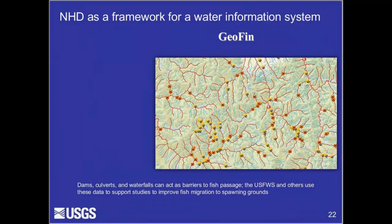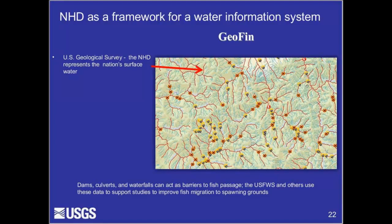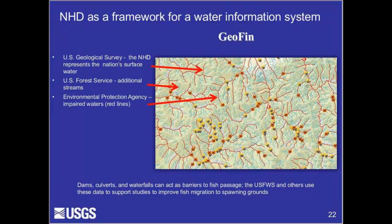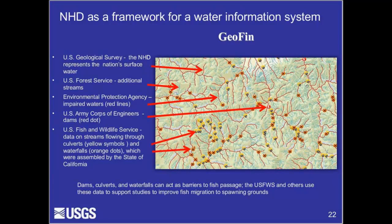A great example of integrating geospatial data to understand complex analysis is Geofin, developed by the U.S. Fish and Wildlife Service for examining the ability of fish to reach upstream spawning grounds. This begins with the NHD to represent streams and rivers, enhanced by the U.S. Forest Service working as stewards of the NHD data. Those streams declared impaired are mapped by the U.S. Environmental Protection Agency using the NHD. The U.S. Army Corps of Engineers identifies dams on rivers that have the potential to block fish from swimming upstream. The U.S. Fish and Wildlife Service and the State of California have also identified locations where fish movement is potentially restricted by culverts, waterfalls, and rapids.